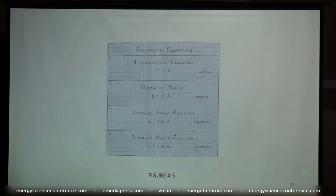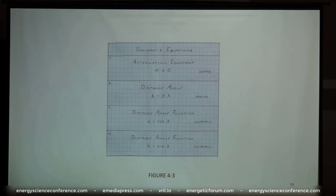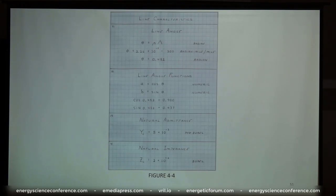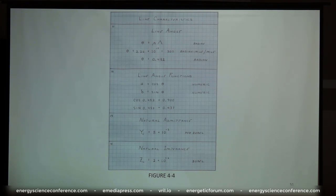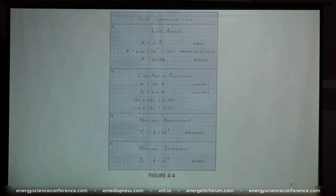That will be similar to the power factor in the prior equations — we will call that the distance angle function. But where the power factor was a function of space or time, in this case it's a function of distance. I'll have some diagrams later that make it clear. We know from either measurement or geometric considerations what the natural impedance and natural admittance of the line are. The geometry of this line is such that it has a natural impedance of what technicians would normally call 200 ohms, but because there's no resistors here, we're going to call it 200 Zobels. We have basically the two things we're after: the line angle and the natural impedance of the line.